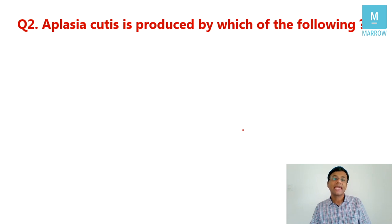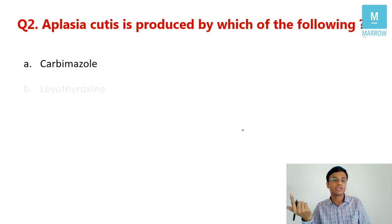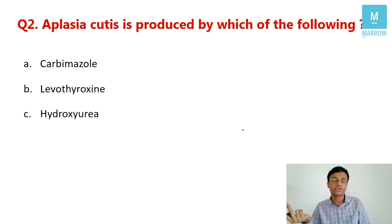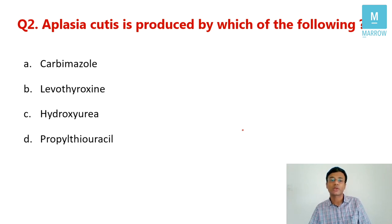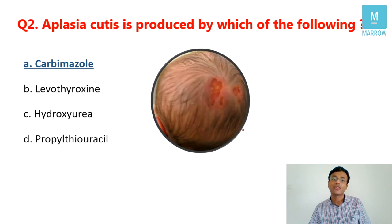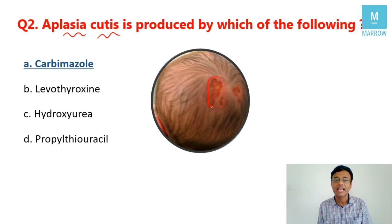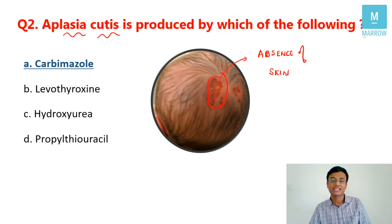Question number two: Aplasia cutis is produced by which of the following? Options were carbamazole, levothyroxine, hydroxyurea, and propylthiouracil. This is more of an OBG-type question. The correct answer was carbamazole, because it produces aplasia cutis — a congenital absence of skin, as seen in the image. This is a straightforward question.